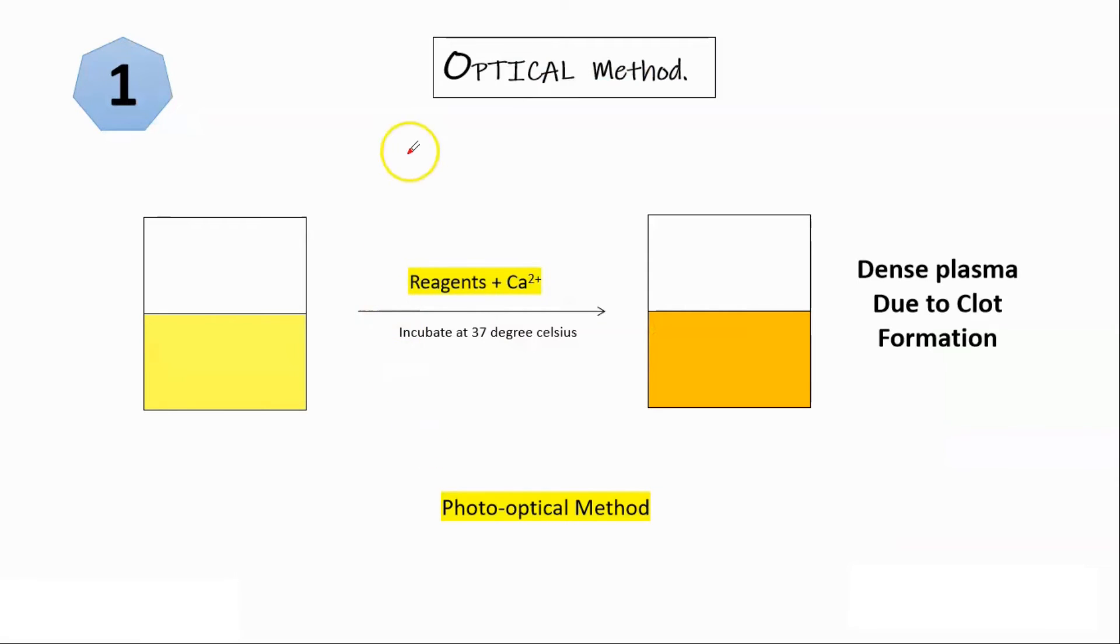Now we will look at the optical method. Previously we have discussed about the mechanical methods that are basically based on the viscosity of plasma. Now we will discuss about the optical methods. So for a moment suppose this is normal plasma. We add all the reagent and all the related stuff for a reaction and incubate at 37 degrees Celsius.